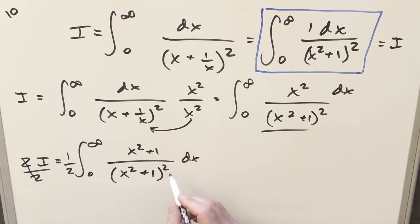Let's get rid of this two by dividing by two on both sides. So we have a half in front. Cancel x squared plus one with one of these. And now we're just integrating one over x squared plus one. But that's our arctan formula.